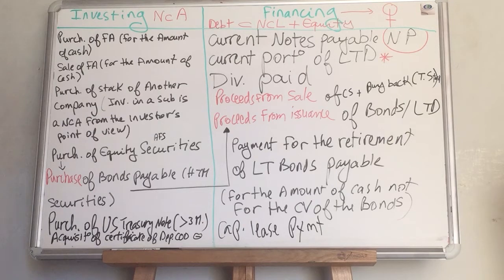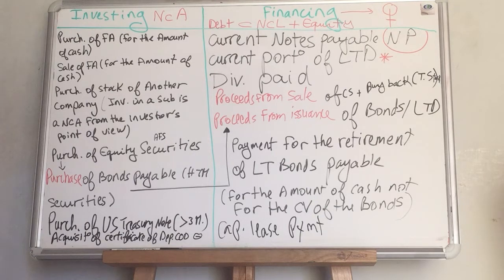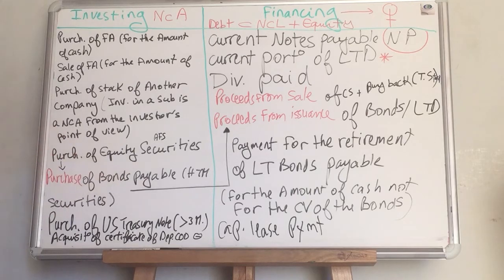When you see bonds payable, look carefully: are they talking about the issuance — proceeds from the issuance? Are they talking about payment for the retirement of the bonds? Or are they just telling you that they are purchasing some bonds payable? If they are purchasing bonds payable, it's in the investing section.